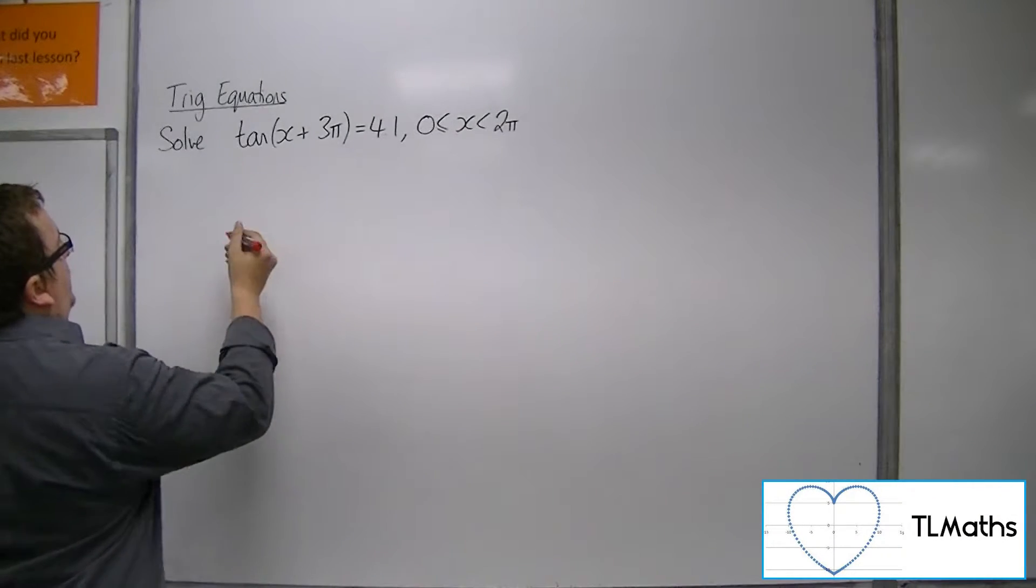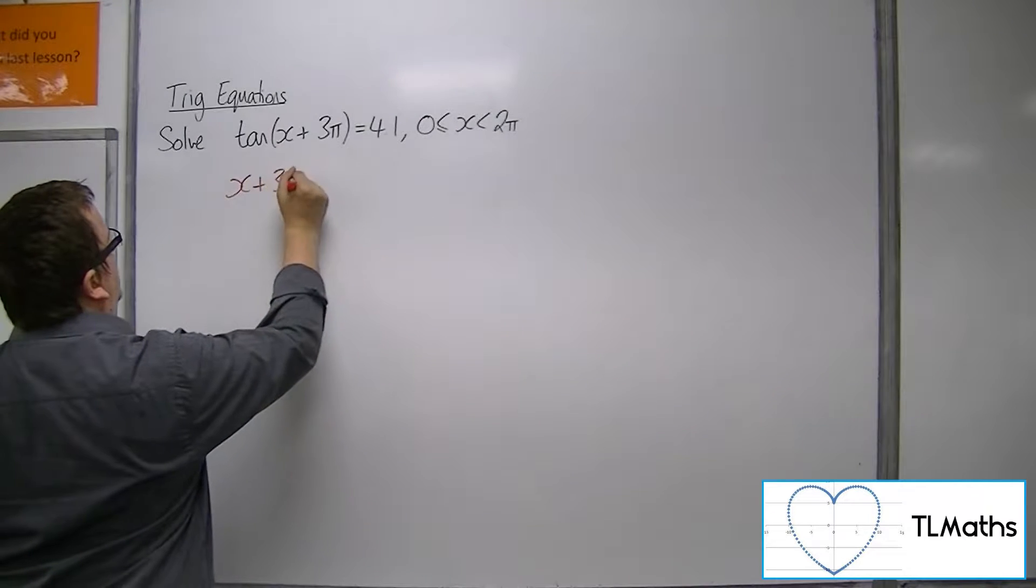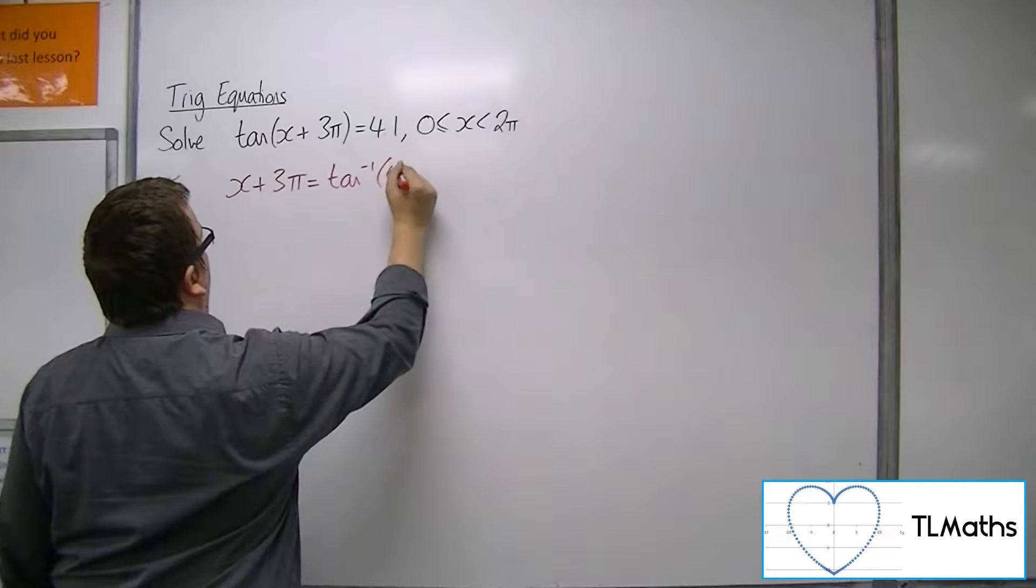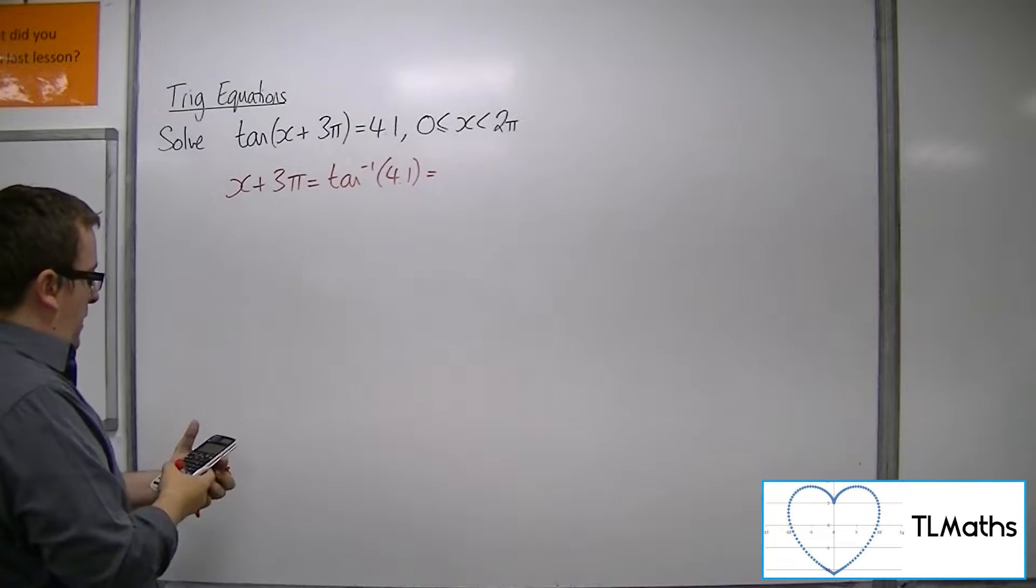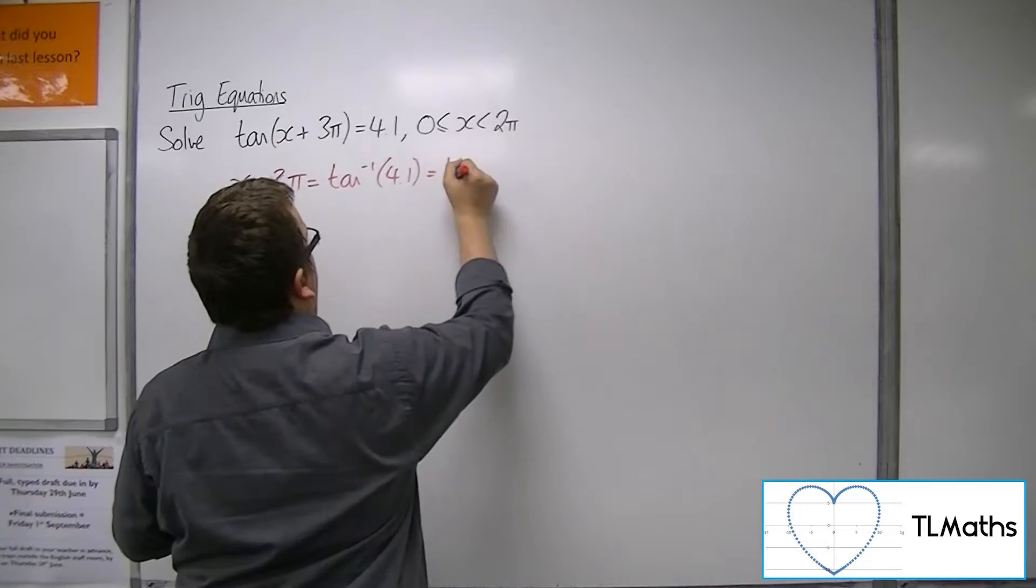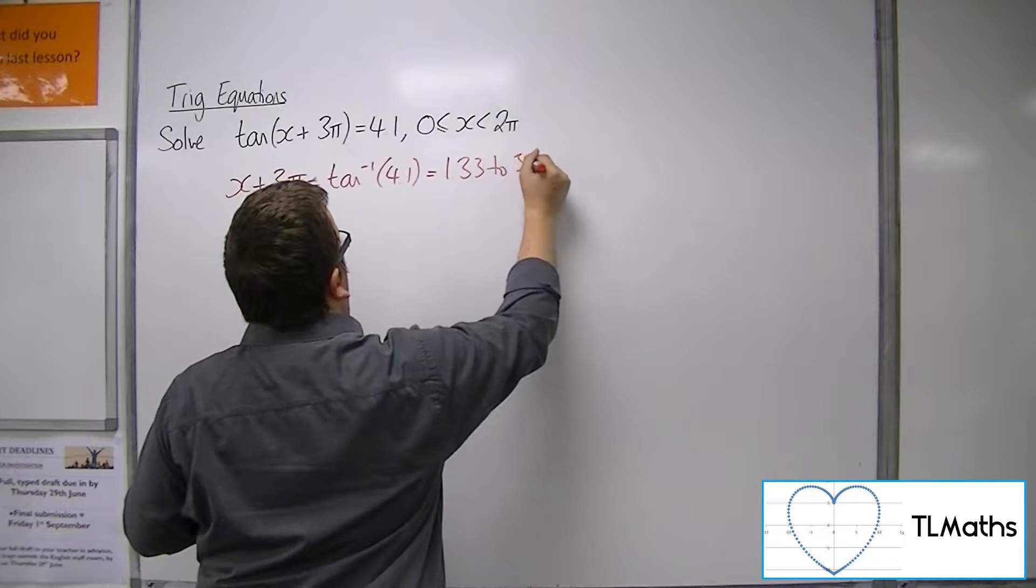So first of all, inverse tan both sides. So inverse tan of 4.1 in radians is 1.33 to 3 significant figures.